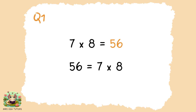Question one: seven times eight is 56. A nice way to remember this, which is often the hardest times table, is 5-6-7-8. If you write it out with the answer in the front, you can see that the numbers are sequential: five, six, seven, eight. So 56 equals seven times eight.